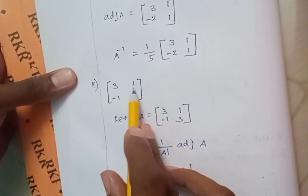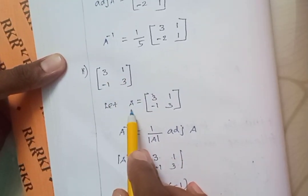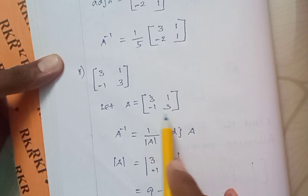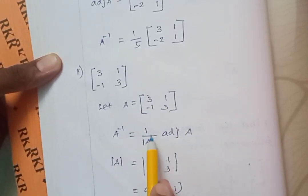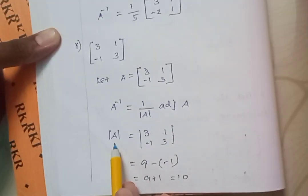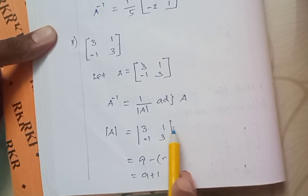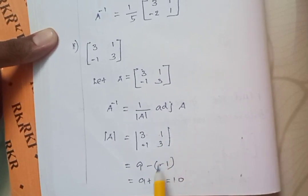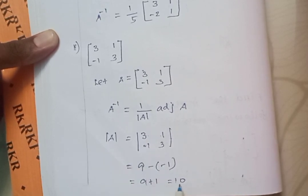Second example: find the inverse of the matrix 3, 1, minus 1, 3. Let this matrix be A, so A equals 3, 1, minus 1, 3. To find A inverse, the formula is 1 divided by determinant of A into adjoint of A. The determinant of A equals the modulus of 3, 1, minus 1, 3. First we do the downward diagonal, then the upward diagonal with a minus sign. So: 3 times 3 equals 9, minus of minus 1 times 1 equals plus 1. That gives 9 plus 1 equals 10. Determinant of A equals 10.